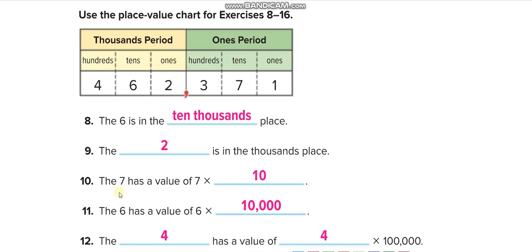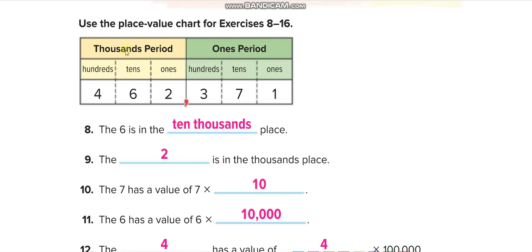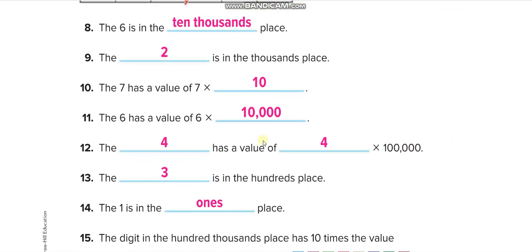The seven has a value of seven times ten, because the place value of seven is tens. If seven were in the hundreds place, we'd write hundred, but since it's in the tens place, it's seven times ten. The six has a value of six times ten thousand, because its place value is ten thousands.